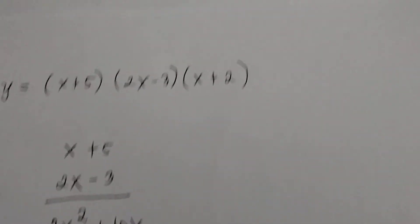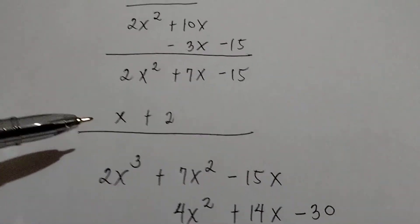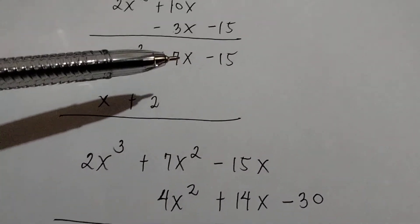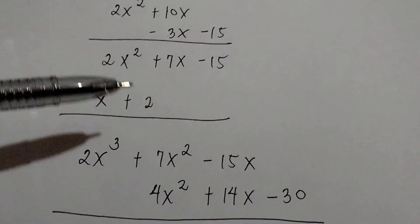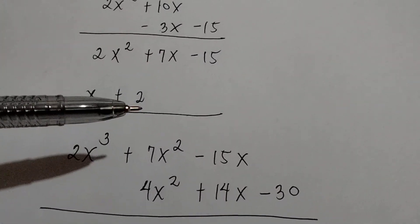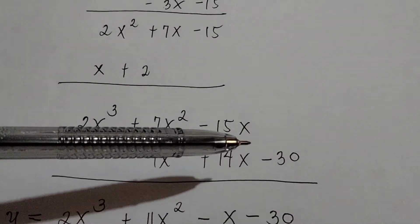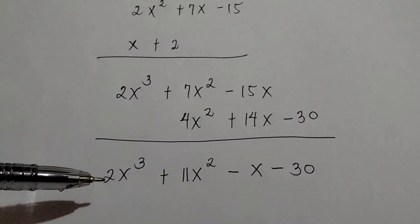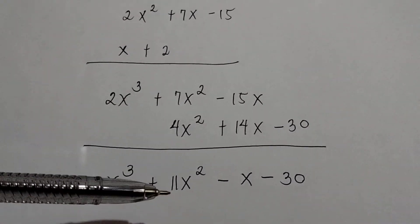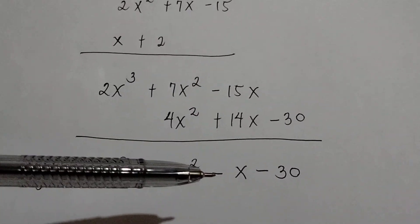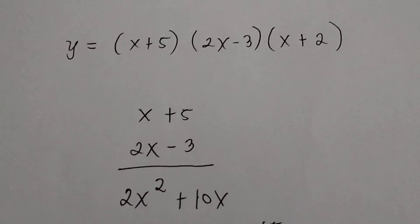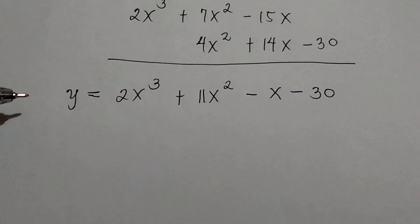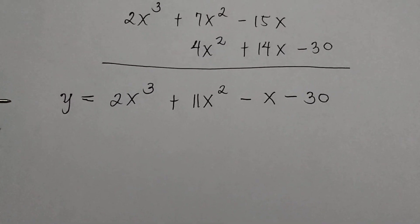Then multiply 2x squared plus 7x minus 15 by x plus 2. 2x squared times x is 2x cubed, 7x times x is 7x squared, negative 15 times x is negative 15x. Then, 2x squared times 2 is 4x squared, 7x times 2 is 14x, and negative 15 times 2 is negative 30. Simplifying: 2x cubed, 7x squared plus 4x squared is 11x squared, negative 15x plus 14x is negative x, and bring down negative 30. Therefore, y equals x plus 5 times 2x minus 3 times x plus 2 in standard form is y equals 2x cubed plus 11x squared minus x minus 30.